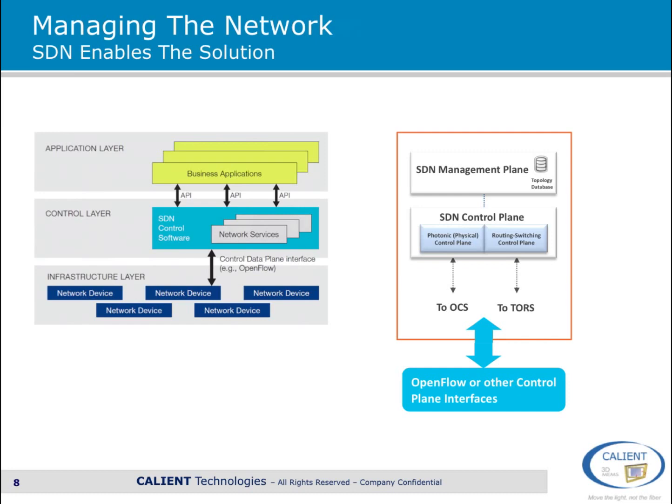How we see this coming together today in large data centers is a management plane and a control plane containing both packet and circuit elements. The management plane creates and manages topologies and related configurations, and it also analyzes the various flows within the network in coordination with the photonic and routing control planes. The control planes then orchestrate the topology-related configuration changes: the photonic engine manages topology changes across the optical layer, while the routing engine manages changes across the routing engines running at the different top-of-rack switches.